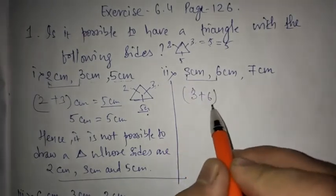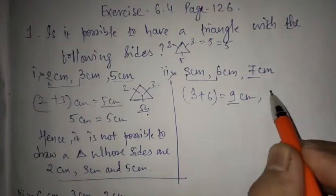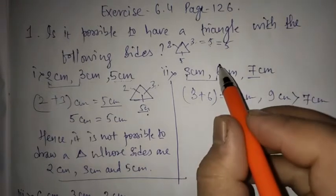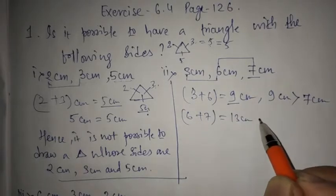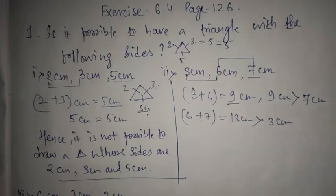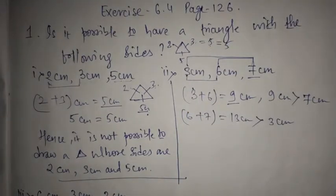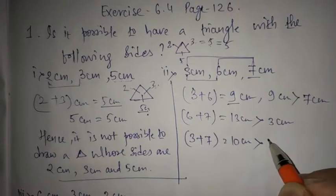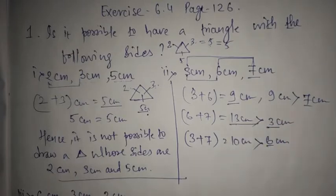When you add 3 plus 6, it is 9 cm. So 9 cm is greater than 7 cm — yes, that is obvious. Now let us check other combinations. 6 plus 7 is equal to 13 cm, which is again greater than 3 cm. Let us check another: 7 plus 3 gives 10 cm, which is always greater than 6 cm. Whatever side remains, the sum of the other two should be greater than it.